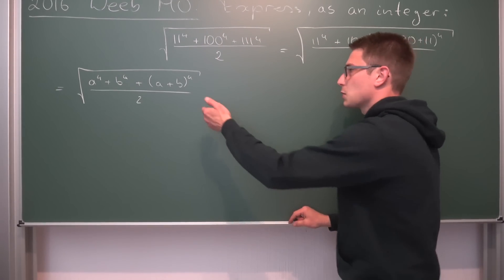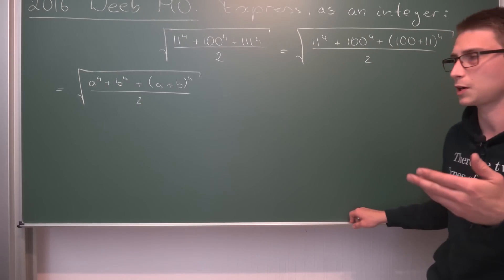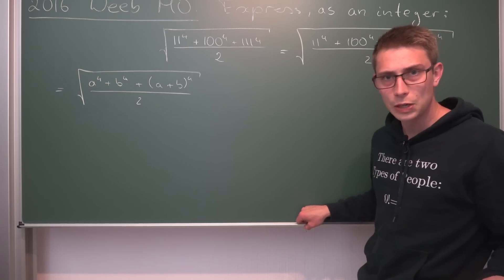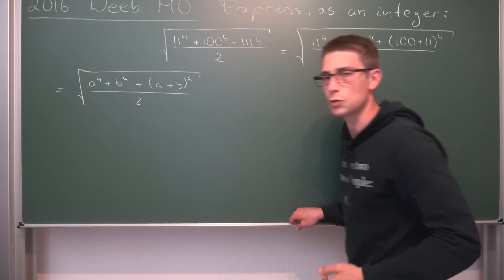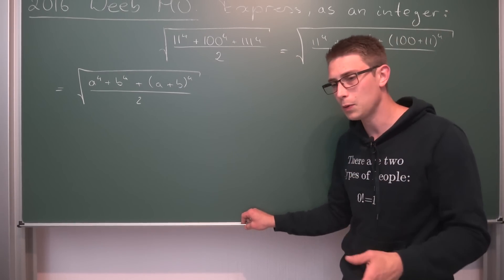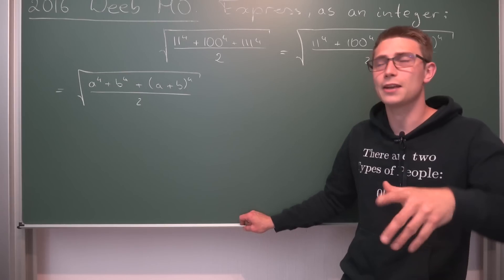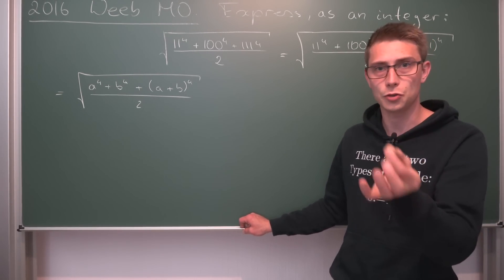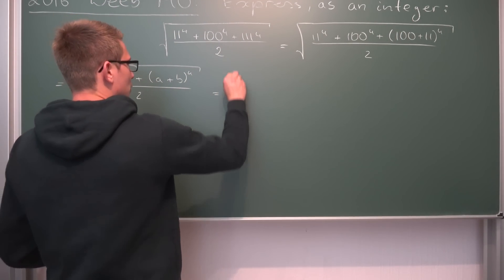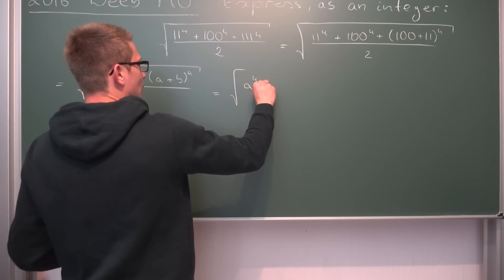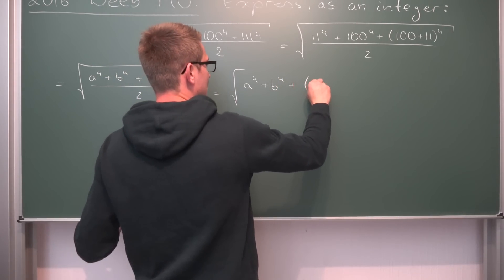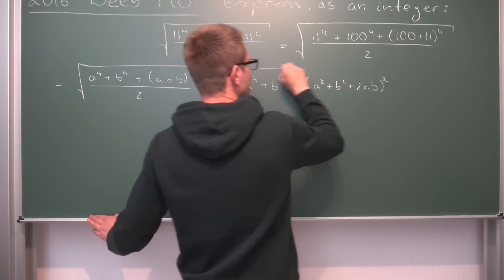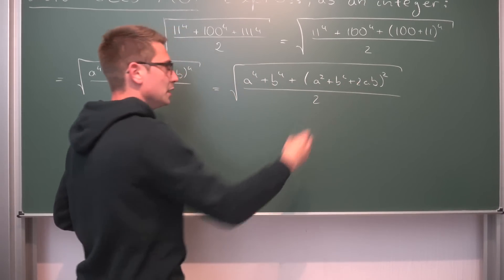Yeah, that's an algebra problem. And now we need to find out how to basically factorize the numerator into some kind of binomial to the 2nd power. And the easiest thing we could do at this point is just write out what a plus b to the 4th power actually is. a plus b to the 4th power is the same as a plus b squared and the whole thing squared once again. And a plus b squared is the same as a squared plus b squared plus 2ab. Meaning if we were to rewrite this, we are going to get the square root of a to the 4th power plus b to the 4th power plus. And now we are going to get a squared plus b squared plus 2ab squared. And all of this divided by 2. This is just a binomial written out.